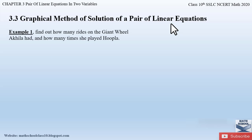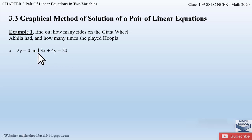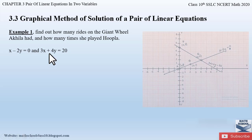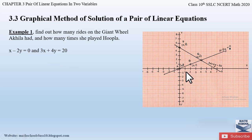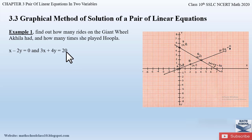Let us consider Example 1, where we found how many rides on the giant wheel Akhila had taken and how many times she played hoopla. We obtained two equations: x minus 2y equals 0, and 3x plus 4y equals 20. Using these equations we plotted the graph, and the two lines intersected each other at the point (4, 2).